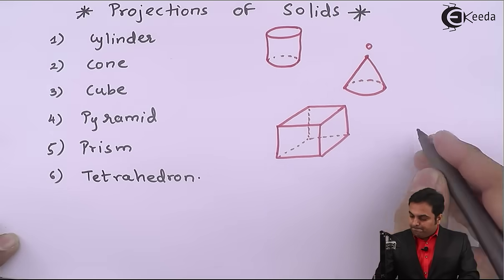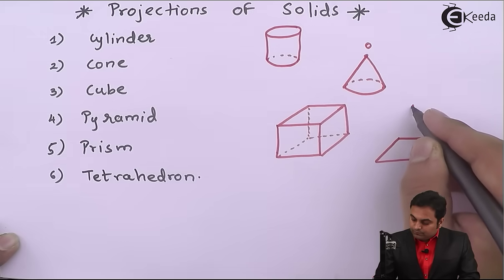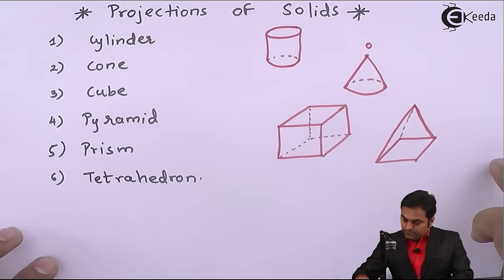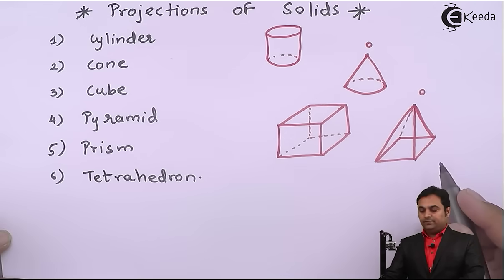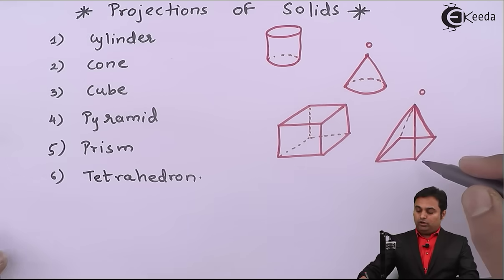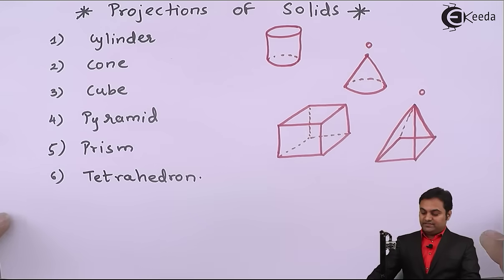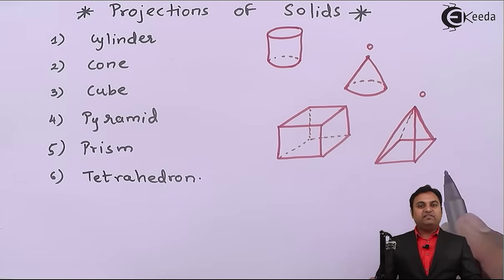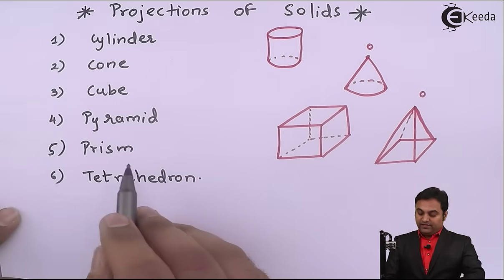Here I have drawn the diagram of a square pyramid in which we have 4 base edges forming a square. All the base edges are connected to a point or vertex. Similarly we can have a pentagonal pyramid which has 5 base edges, and a hexagonal pyramid which has 6 base edges.